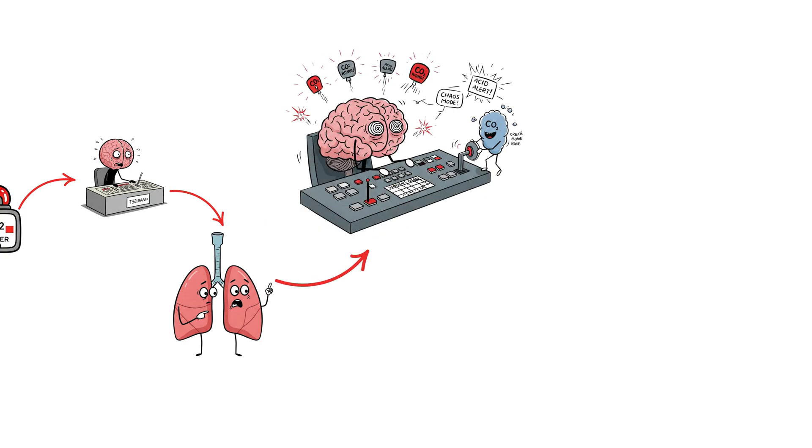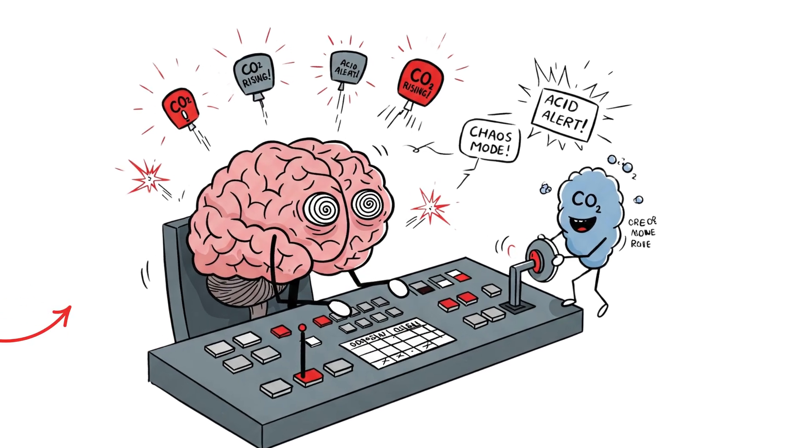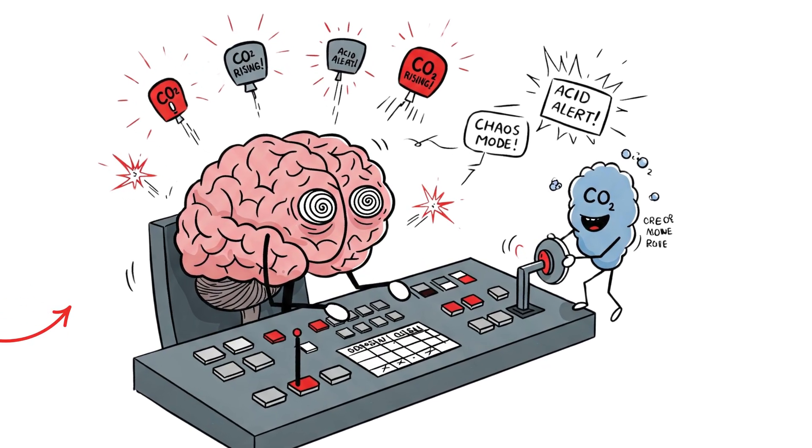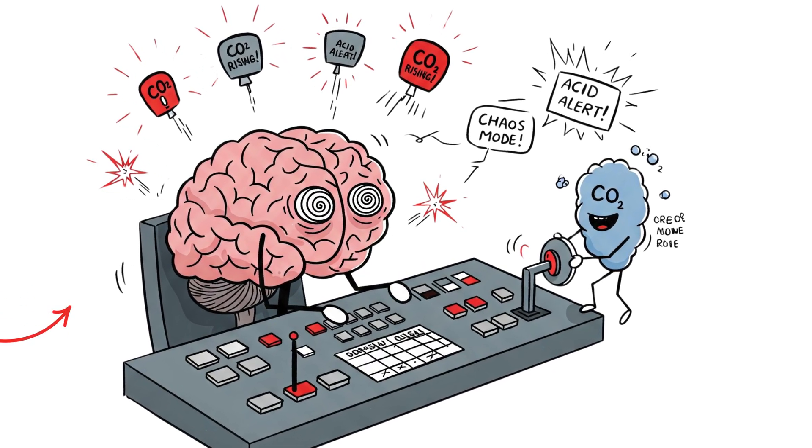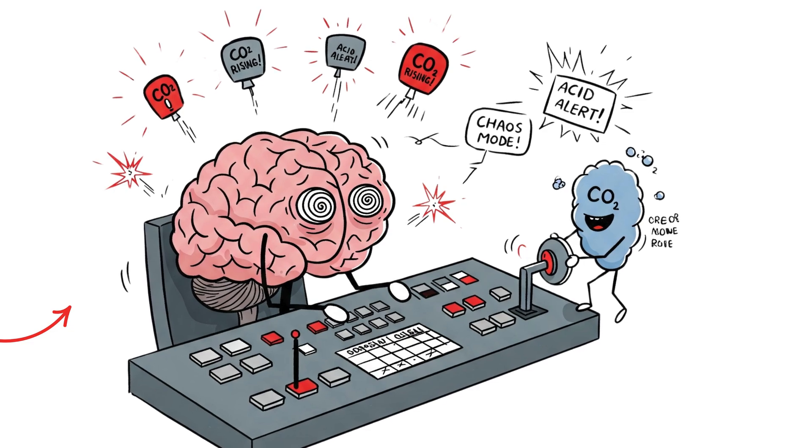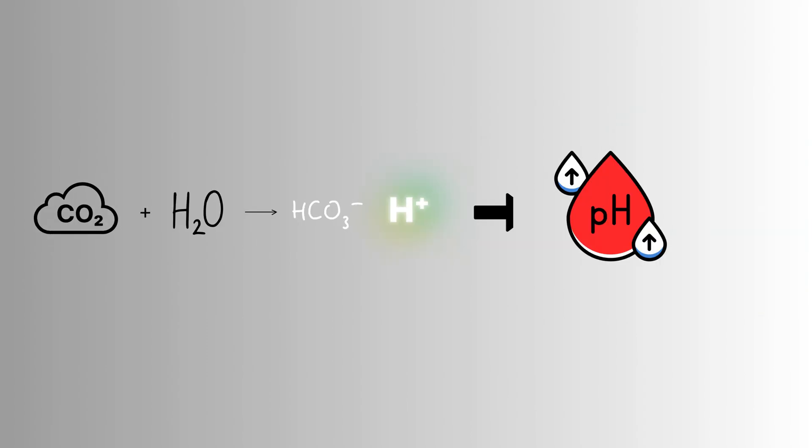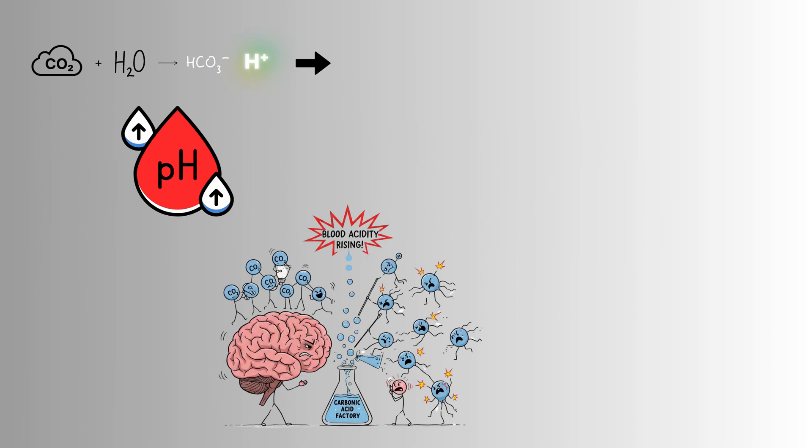The brain is a major target of hypercapnia. It's incredibly sensitive to changes in blood chemistry, and rising CO2 levels, along with the resulting respiratory acidosis, have a profound impact on its function. As CO2 builds up, it reacts with water to form carbonic acid, which then releases hydrogen ions, making the blood more acidic.